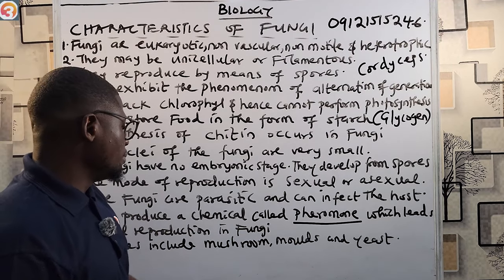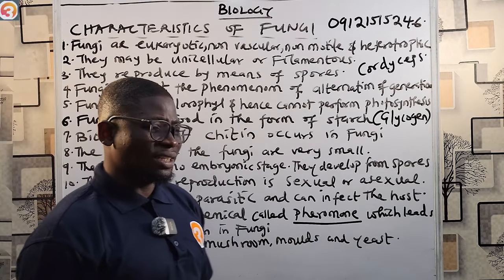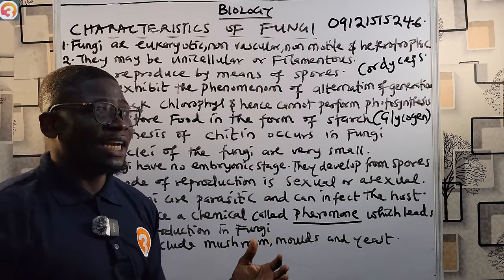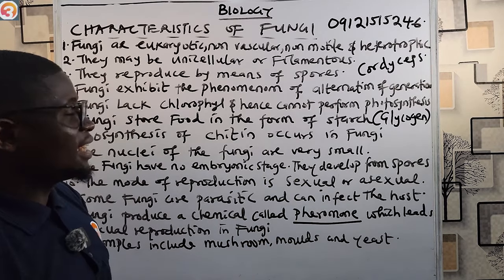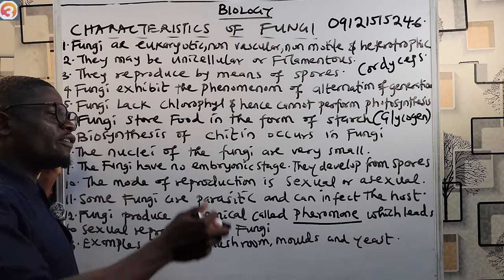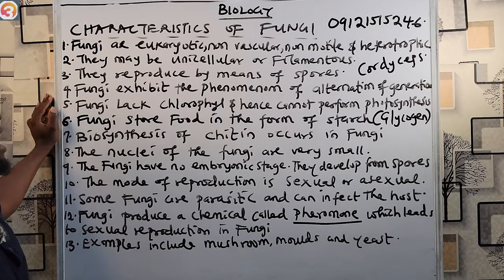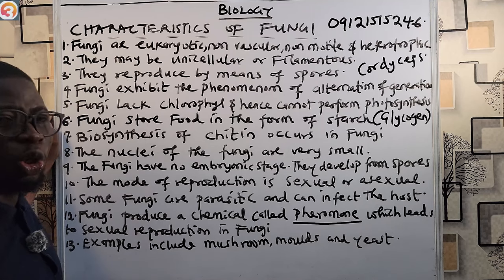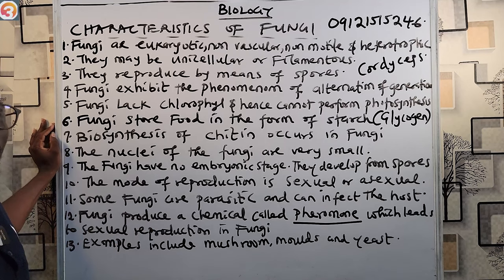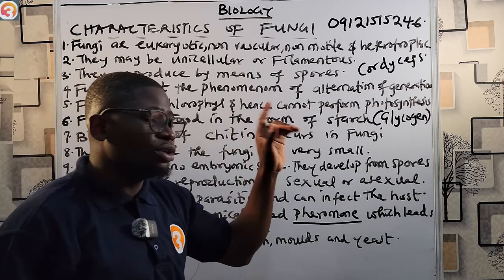Examples of fungi include the mushroom, the molds, the yeast, the truffles, and so on. So those are the characteristics of fungi. To recap: they are eukaryotic, non-vascular, non-motile, and heterotrophic. They may be unicellular or filamentous. They reproduce by means of spores. Fungi show the phenomenon of alternation of generation. Fungi lack chlorophyll and hence cannot perform photosynthesis. Fungi store food in the form of glycogen.